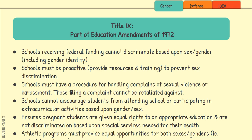Schools must provide training — often before hiring and at the start of the school year — so teachers can identify sexual discrimination among students, between teachers, and between teachers and students, and know how to report it. Schools must also have a procedure for handling complaints of sexual violence or harassment, and the filing of such a complaint cannot be retaliated against.